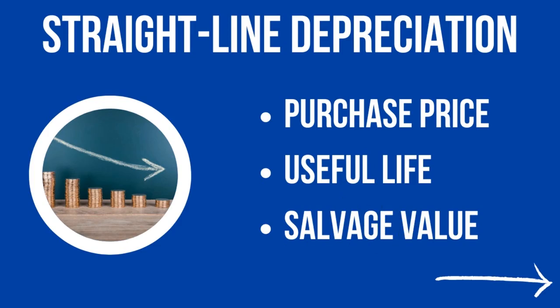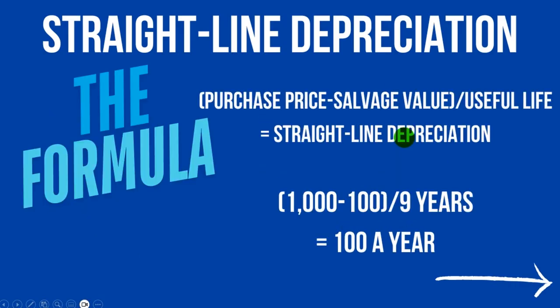Any questions, let me know below. Once we have that information, here is the formula — this is how we calculate straight line depreciation. The purchase price minus the salvage value, divided by the useful life in years, gives us our straight line depreciation. If you're a bit confused right now, don't worry — there are examples coming that will make things crystal clear.